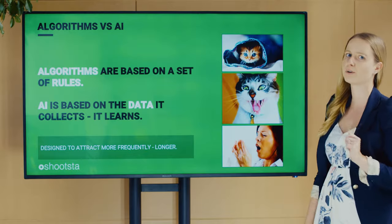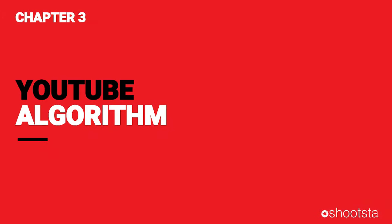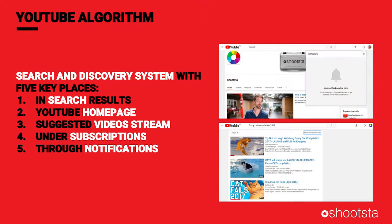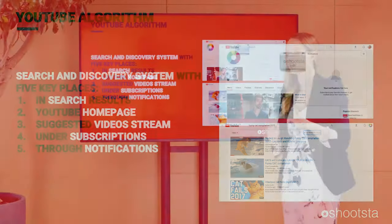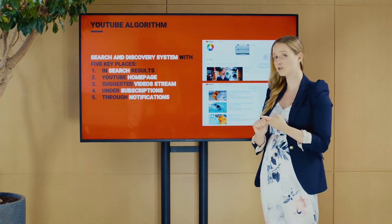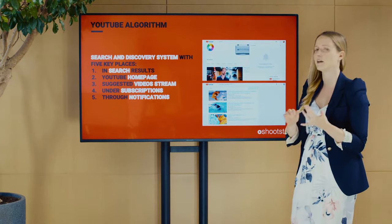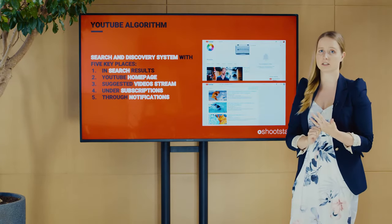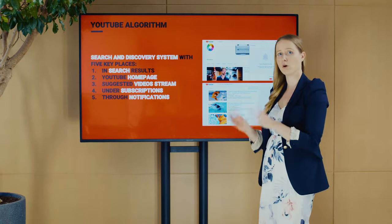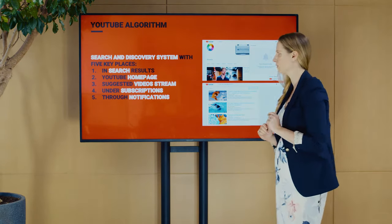Now let's talk about YouTube. YouTube serves video in five key places: in search results, on the home page, in the suggested stream, under subscriptions, and through notifications. How does it know which video to serve where? The key thing to remember is that YouTube is a social platform and its algorithms focus on audience interaction.